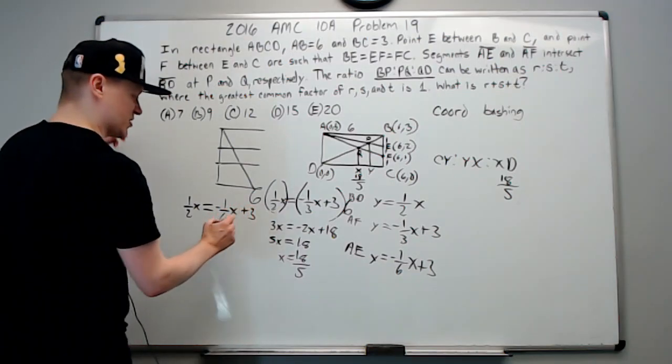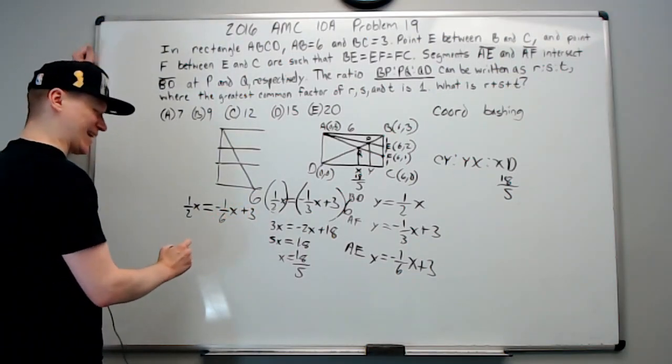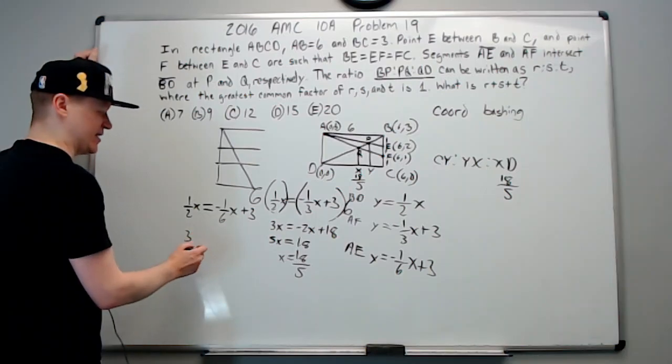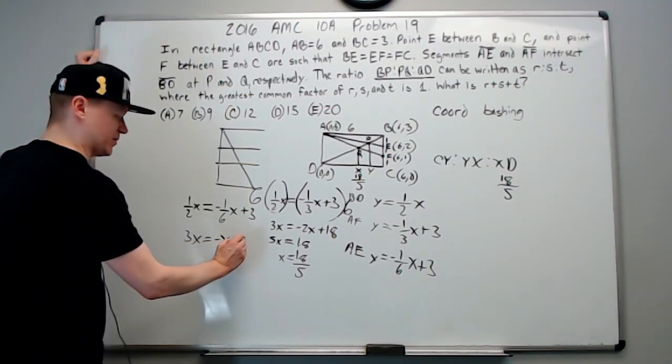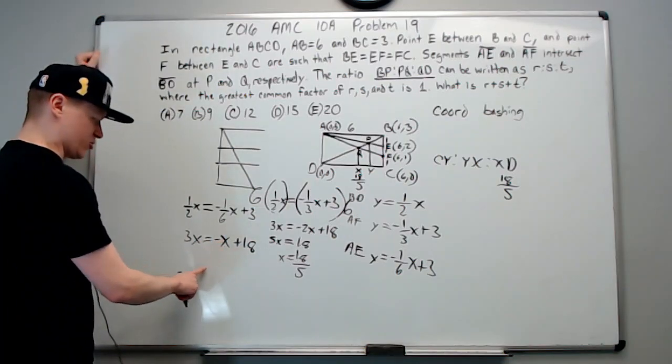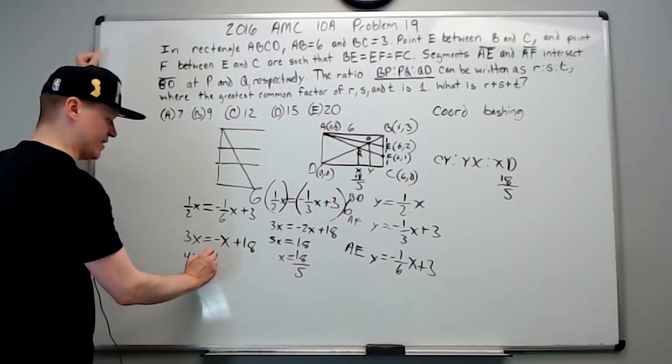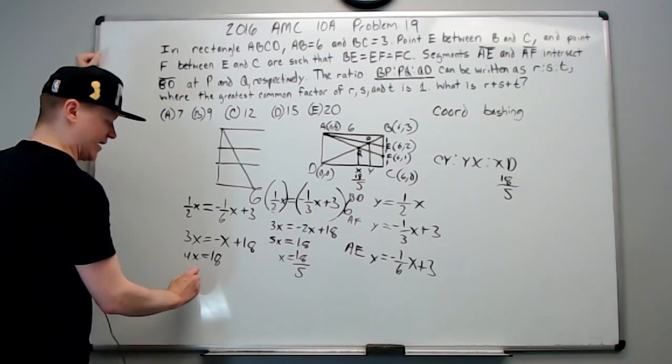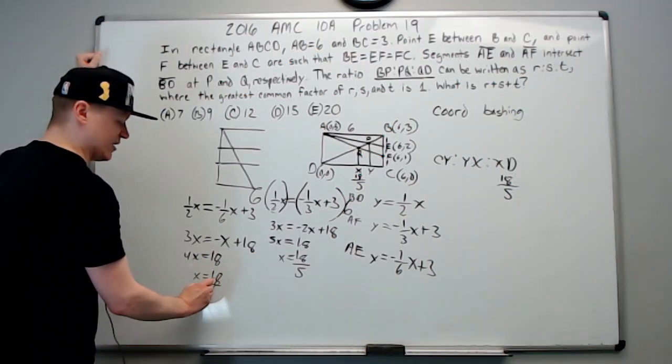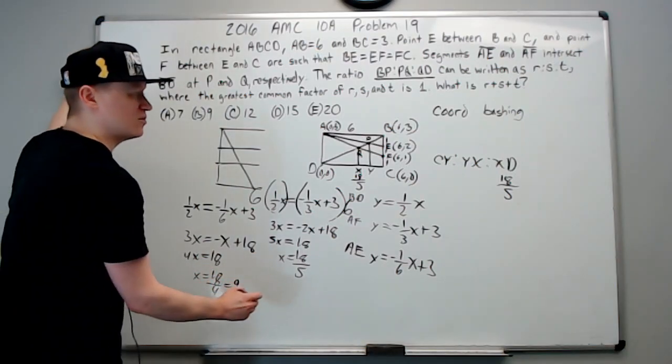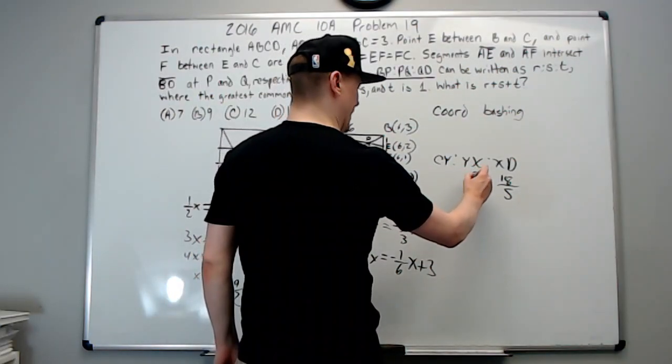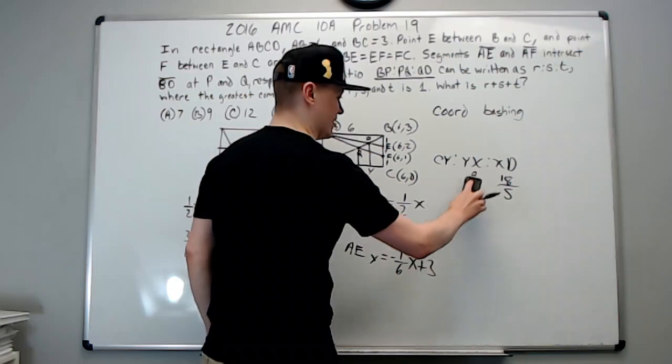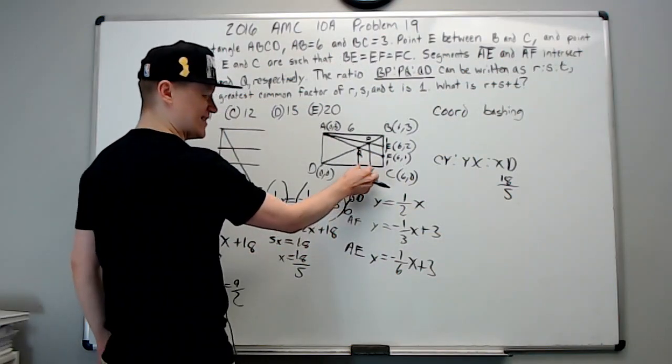So that's going to be one half x equals negative one sixth x plus three. Again, multiply by six, so you'll get three x equals negative x plus 18. Subtract x to get 4x equals 18, and x will equal 18 over 4 or 9 over 2. I will write it as 9 over 2.